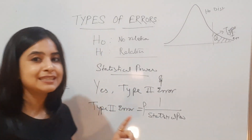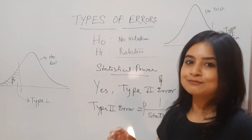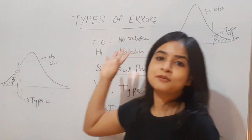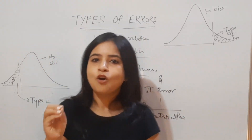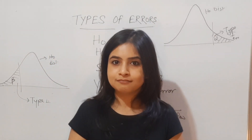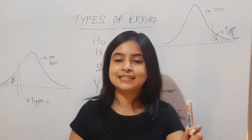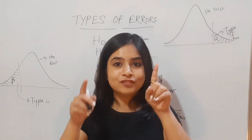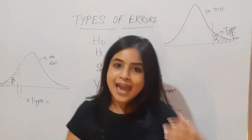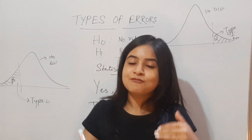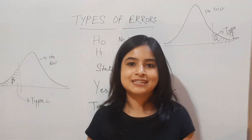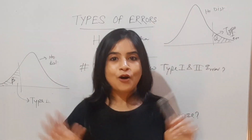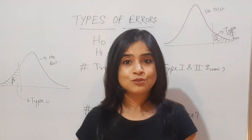Regarding Type 1 error: how can we reduce it? Think conceptually — Type 1 error depends on alpha, the level of significance. So we can lower Type 1 error by reducing our level of significance. That is how we can take control of our Type 1 error.